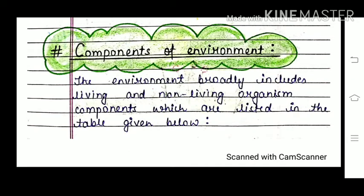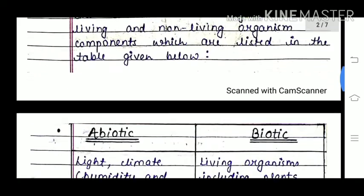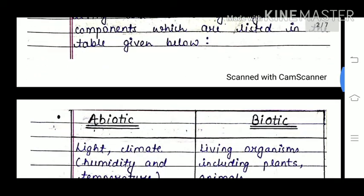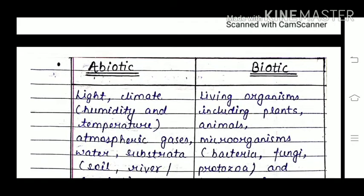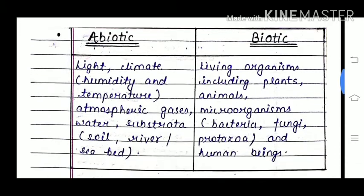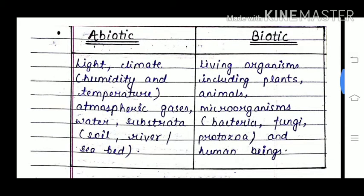The environment broadly includes living and non-living organism components. There are two types of components of environment: abiotic components, which are the non-living components, and biotic components, which are the living components.